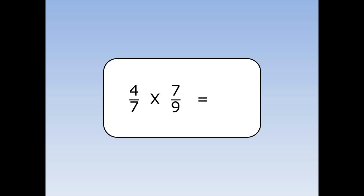4 sevenths times 7 ninths. I've got a 7 on the top and a 7 on the bottom, so I'm going to divide them both by 7. 7 divided by 7 is 1, and then I continue as normal. Top by top: 4 times 1 is 4. Bottom by bottom: 1 times 9 is 9.